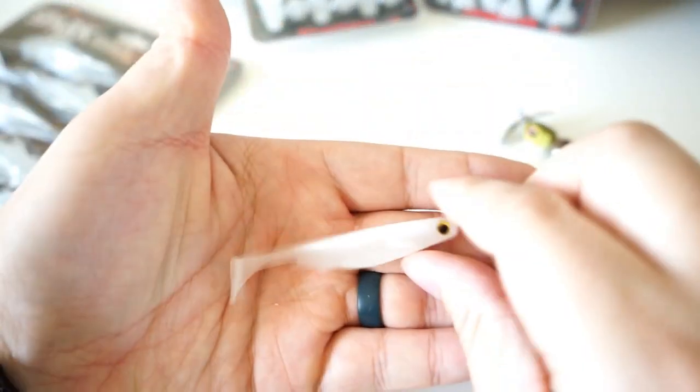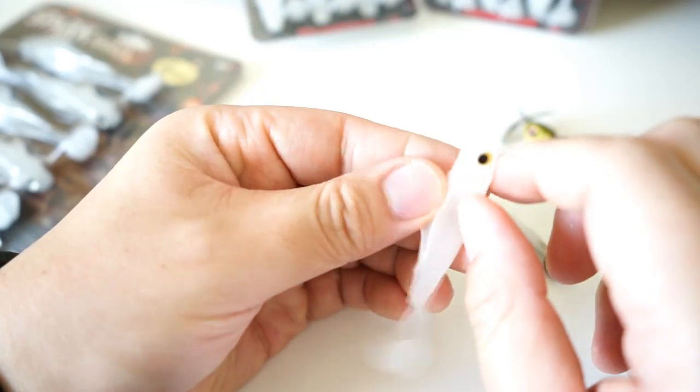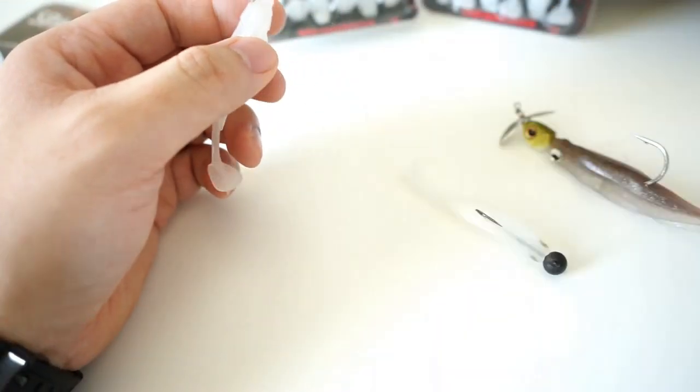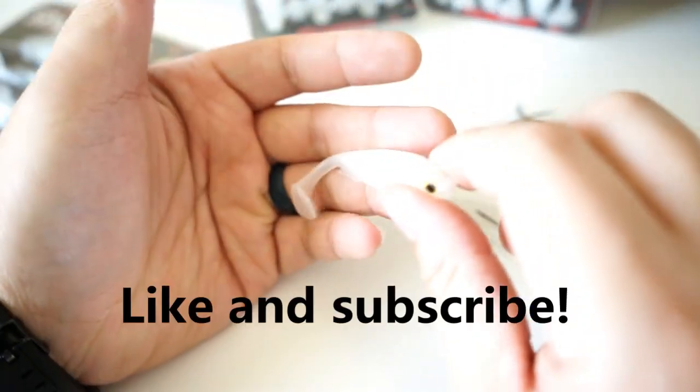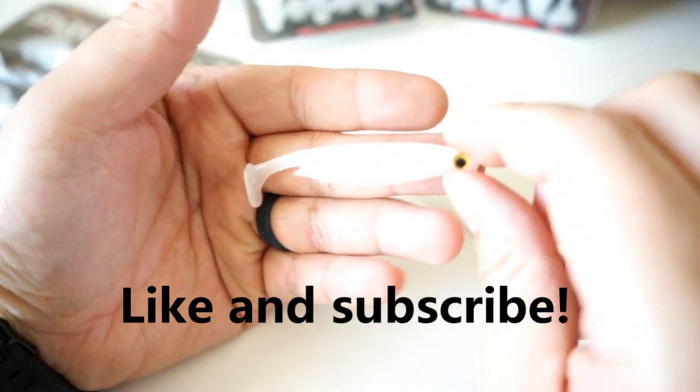Here it is, the Spark Shad. Any kind of questions, let me know. This is an awesome great bait. Obviously you can tell I have a few of these in my other box. I love these little swimbaits on ball head jigs. If you guys like the video, go ahead and comment, like, and subscribe. Totally appreciate it. This here is the Megabass Spark Shad.